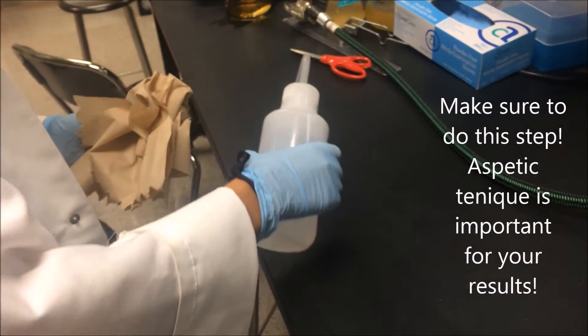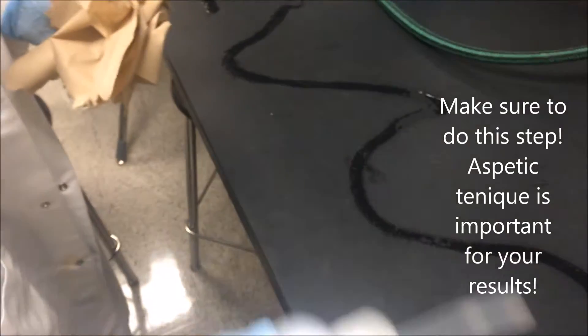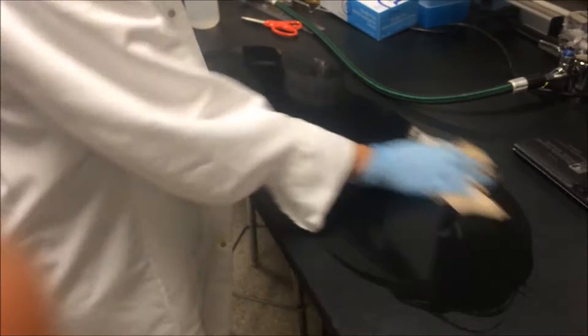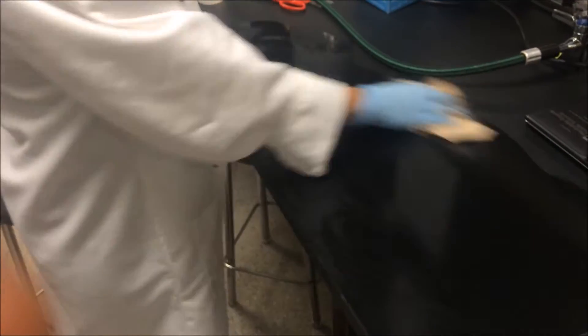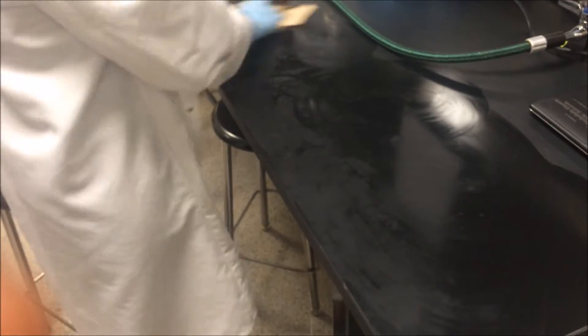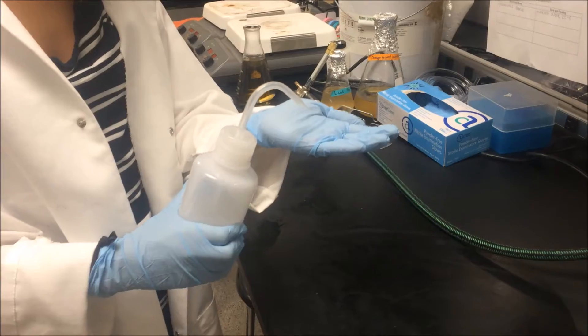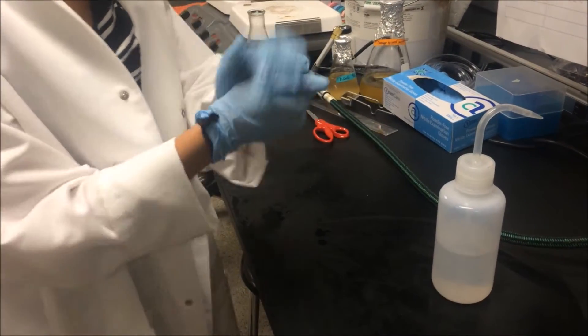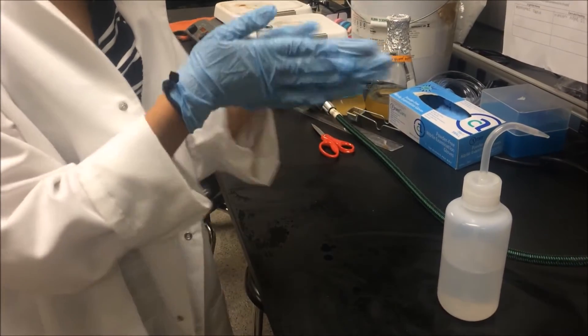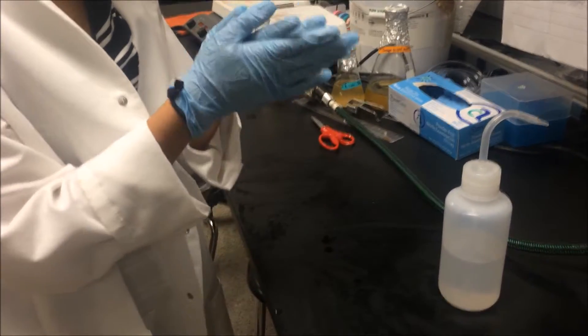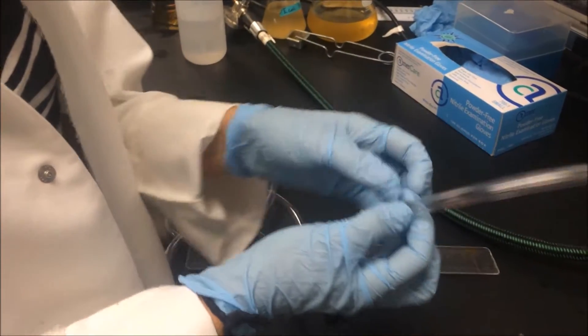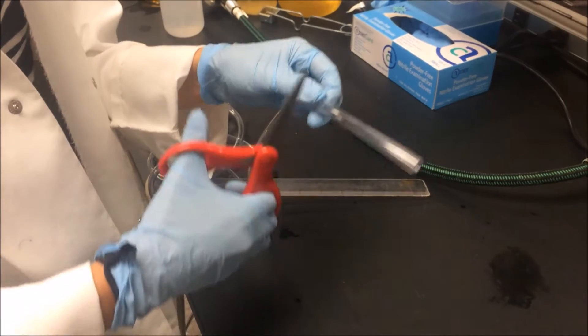Spray off bench with 70% ethanol. Put ethanol on hands. Measure 10 centimeters. Now cut.